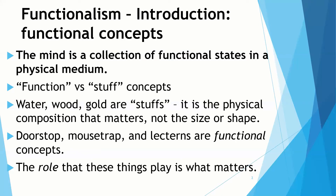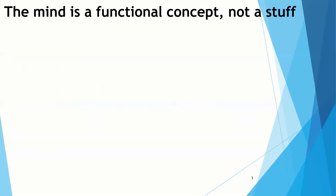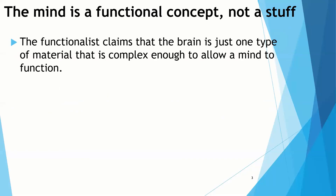So what does functionalism say about the mind? The idea is that the mind is a functional concept — it's not a stuff. Just as a doorstop could be made of different materials, just as aerobic exercise could take on different forms like running, swimming, biking, or Zumba, the functionalist will claim that the brain is just one type of material complex enough to allow a mind to function. You could have a mind within other materials; it doesn't have to be a human brain.